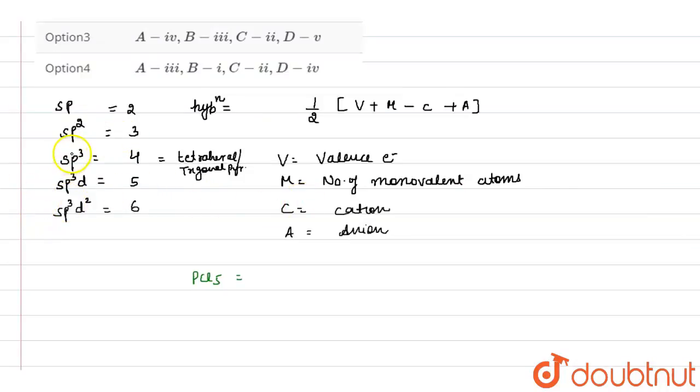phosphorus belongs to element group number 15, that means it has 5 valence electrons plus number of monovalent atoms, that means chlorine are 5. There is no cation and no anion. That means this will be half multiplied by 10, that will be 5.